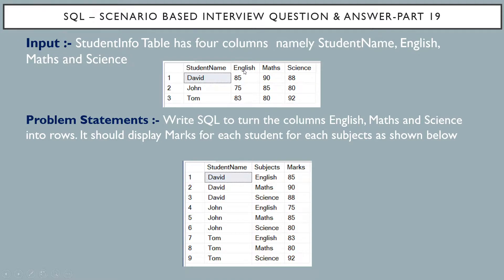In the input table, columns English, maths, and science need to be turned into rows for each student, along with their corresponding marks. In the output table, it is the intersection of student name and subject that produces the marks. For example, David with subject English has marks 85, David with maths has marks 90, and David with science has marks 88.